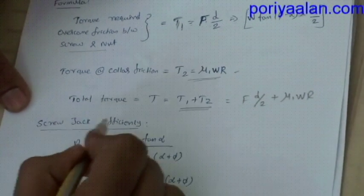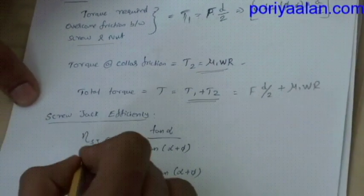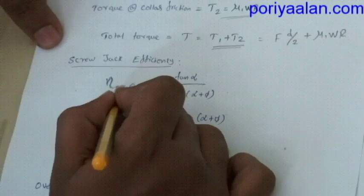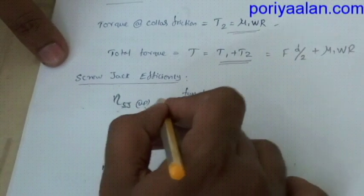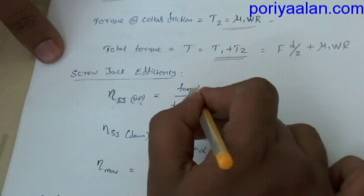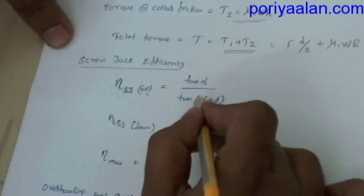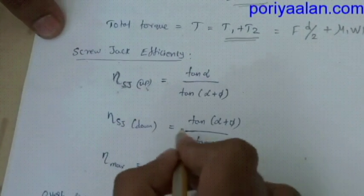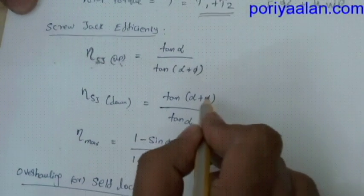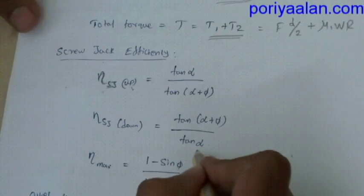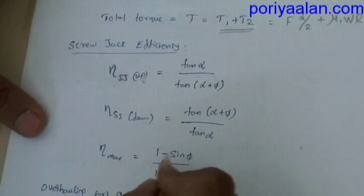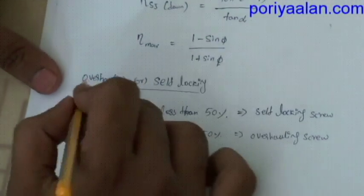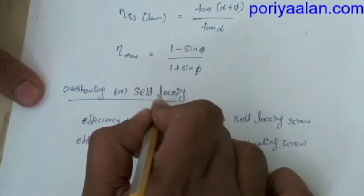Then screw jack efficiency. Screw jack efficiency upward is equal to η_SJ = tan α divided by tan(α + φ). Screw jack downward efficiency is η = tan α. Then maximum efficiency is equal to (1 − sin φ) by (1 + sin φ). There are two cases: overhauling and self-locking.